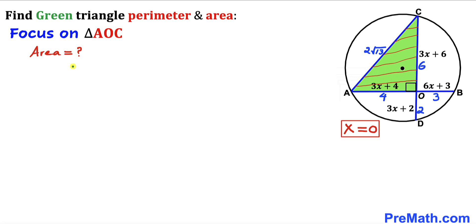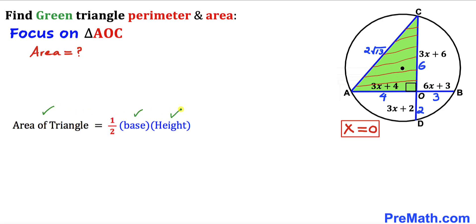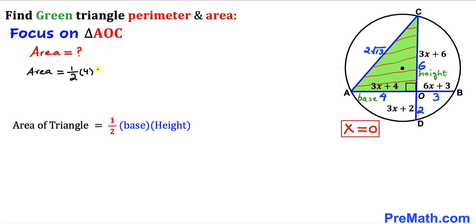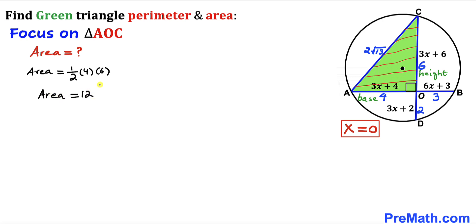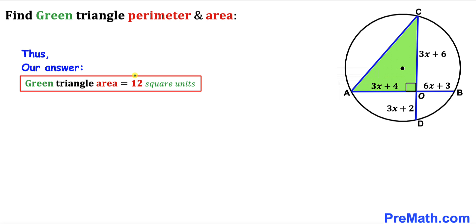For our final step, let's calculate the area of this green triangle. Recalling the area of a triangle formula: Area = ½ × base × height. In our case the base is 4 and the height is 6, so the area = ½ × 4 × 6 = 12. Thus the area of this green triangle turns out to be 12 square units. Thanks for watching and please don't forget to subscribe to my channel for more exciting videos.